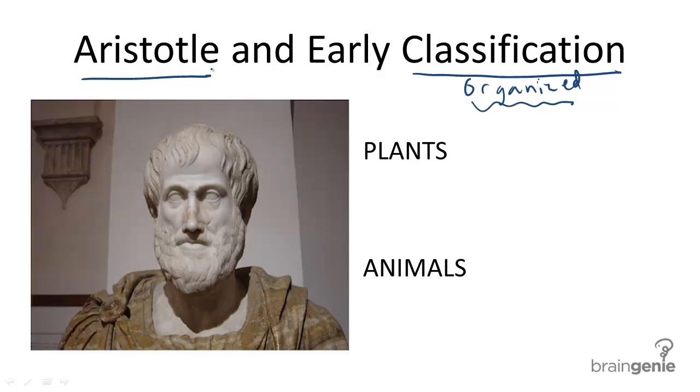Aristotle, for example, thought about classification of organisms, but he did so in a very different way than we currently do in modern biology. He was astute enough to recognize that there were distinct differences between plants and animals.